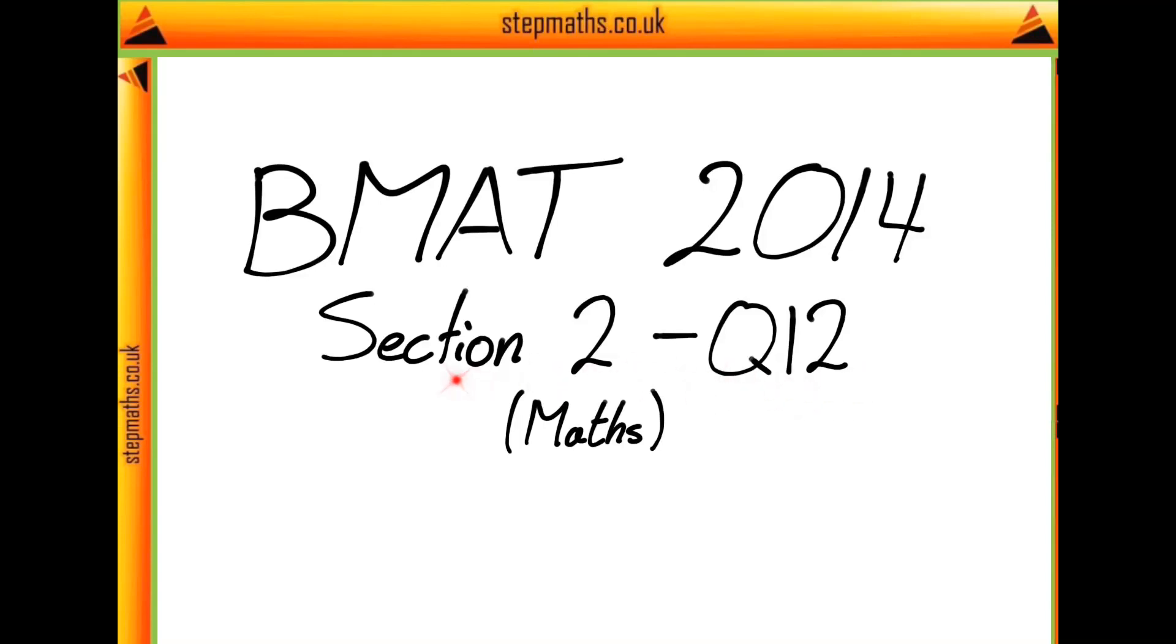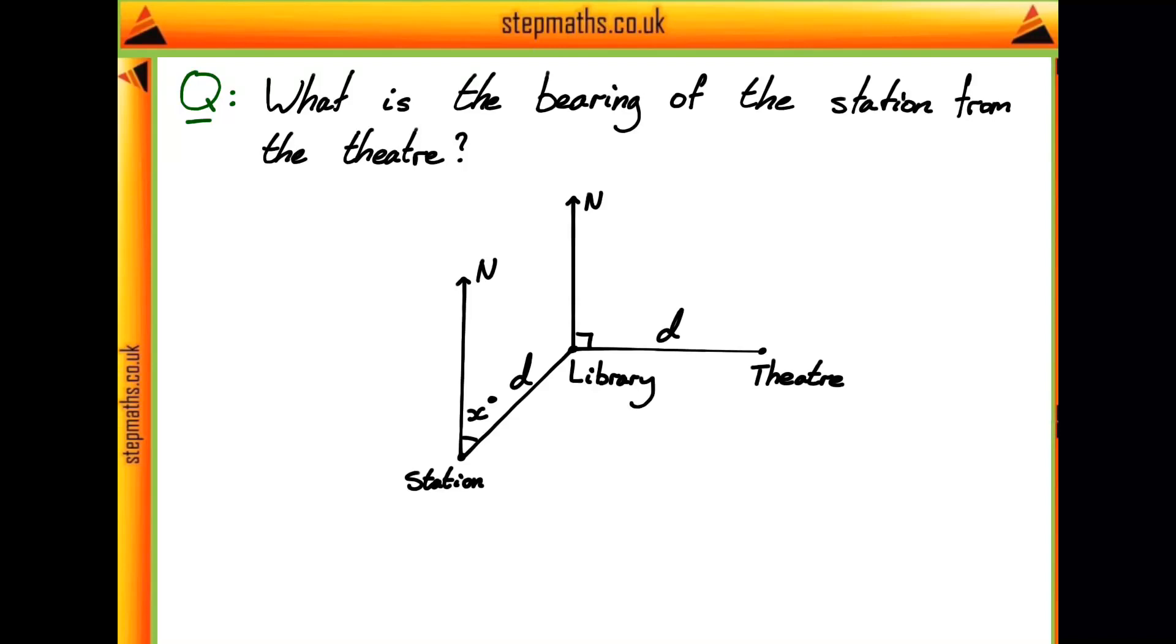Here we're going to look at question 12 from section 2 of the BMAT 2014 paper. In this question we're given the following diagram. We have a station and then at a bearing of x degrees a distance d away there's a library and then directly east a distance d again and we have a theatre.